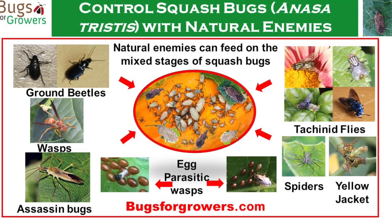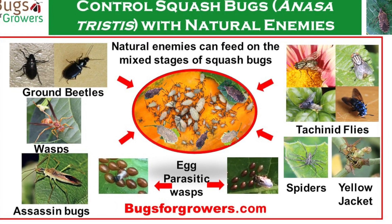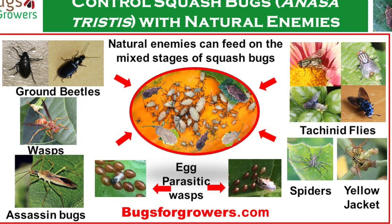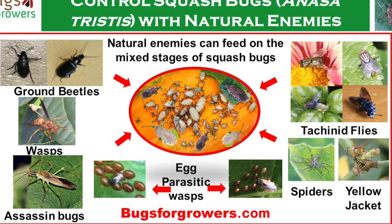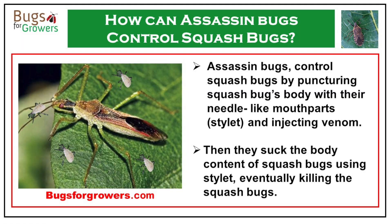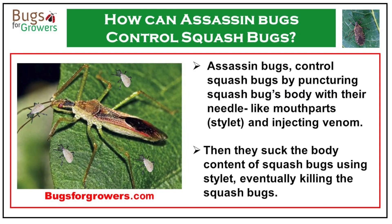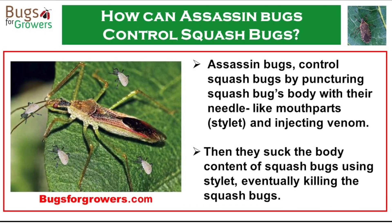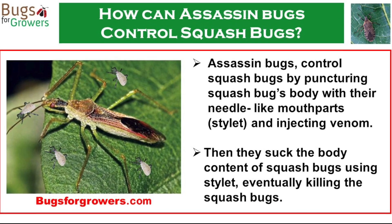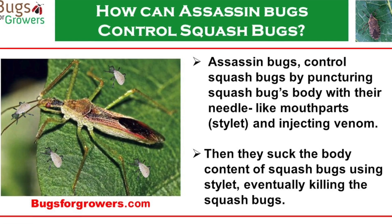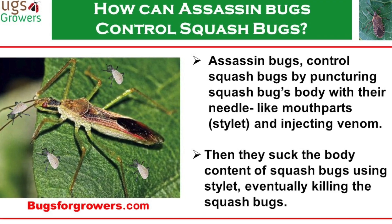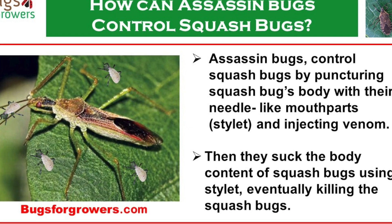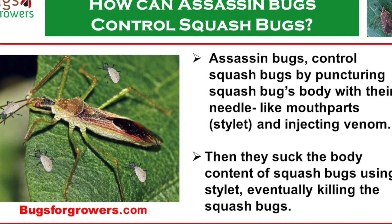Natural enemies such as predators and parasitoids provide a sustainable way to control squash bug populations below economic threshold levels without heavy reliance on chemical pesticides. For example, assassin bugs are natural predators of squash bugs and other insect pests. They are also commercially used as biological control agents. Assassin bugs control squash bugs by puncturing and sucking out the body content of nymphs and adults with their needle-like mouthparts, eventually killing them.